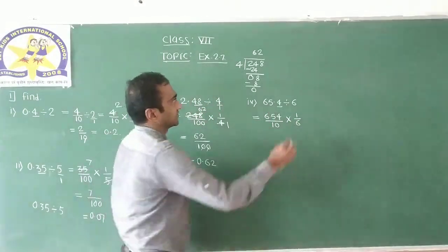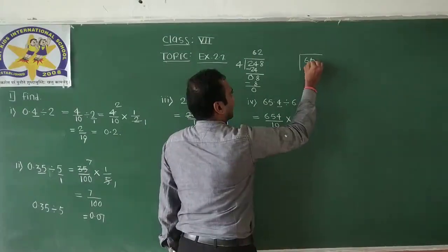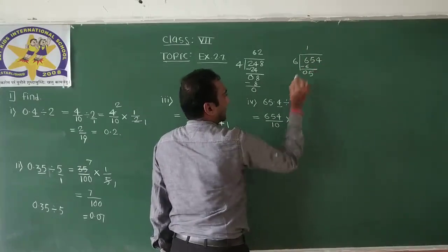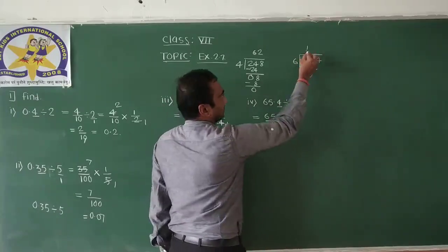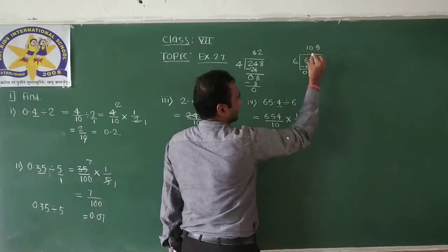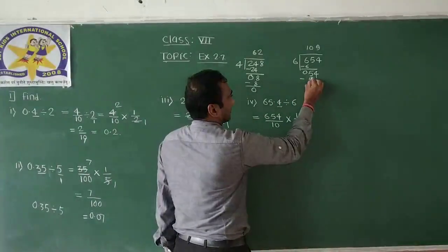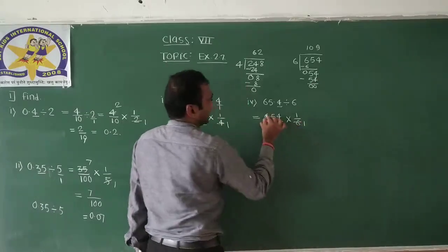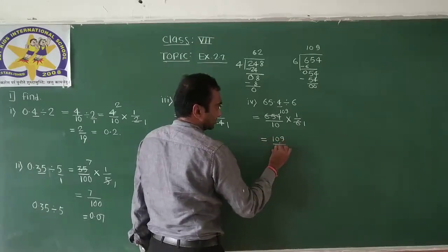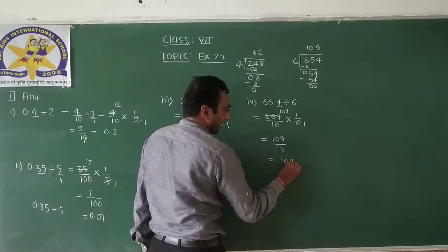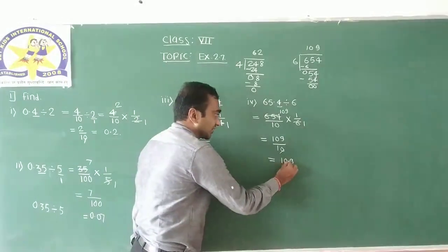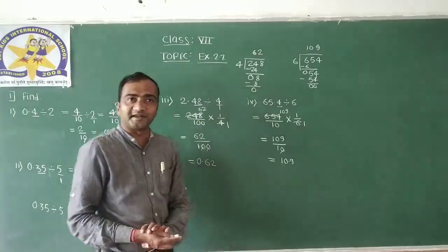Now divide 654 by 6. 6 into 6 is 1, remainder 0. Take next number 5 — we can't divide 5 by 6, so write 0 and bring down 4, making 54. 6 times 9 is 54, remainder 0. So the division gives us 109 in the numerator, divided by 10 in the denominator. There is 1 zero in the denominator, so after 1 digit we place the decimal point. The answer to the fourth question is 10.9.